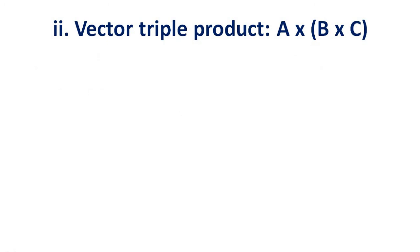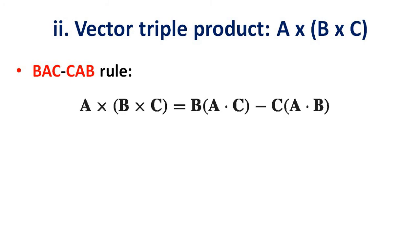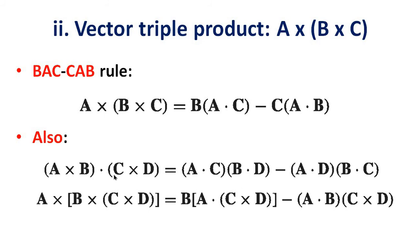Vector triple product: a cross b cross c. To solve a vector triple product, we use the BAC minus CAB rule, also called the BAC-CAB rule: a cross b cross c equals b times (a dot c) minus c times (a dot b). Also, a cross b dot c cross d equals (a dot c)(b dot d) minus (a dot d)(b dot c). And a cross b cross c cross d equals b times (a dot c cross d) minus a times (b dot c cross d).